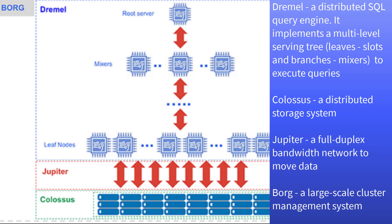The branches of the tree are mixers. Mixers perform the aggregation. BigQuery leverages Google's Jupiter network to move data extremely rapidly from one place to another. The mixers and the slots are all run by Borg. This is BigQuery's architecture to work as an elastic data warehouse.